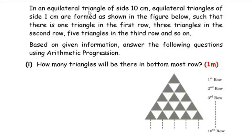In an equilateral triangle of side 10 cm, equilateral triangles of side 1 cm are formed as shown in the figure below such that there is one triangle in the first row, three triangles in the second row, five triangles in the third row and so on. Based on the given information, answer the following questions using arithmetic progression. The first question is: how many triangles will there be in the bottommost row?